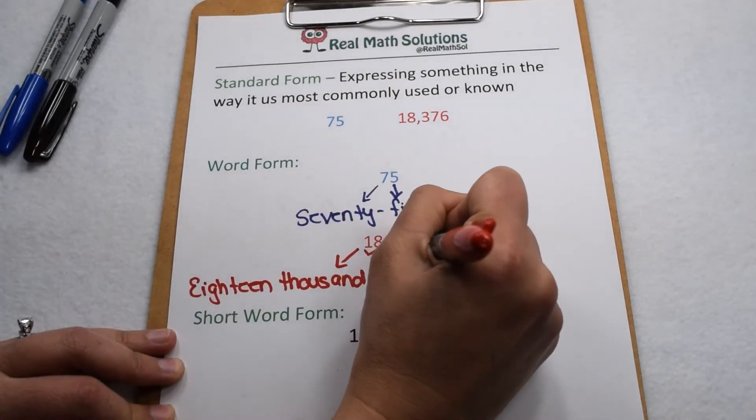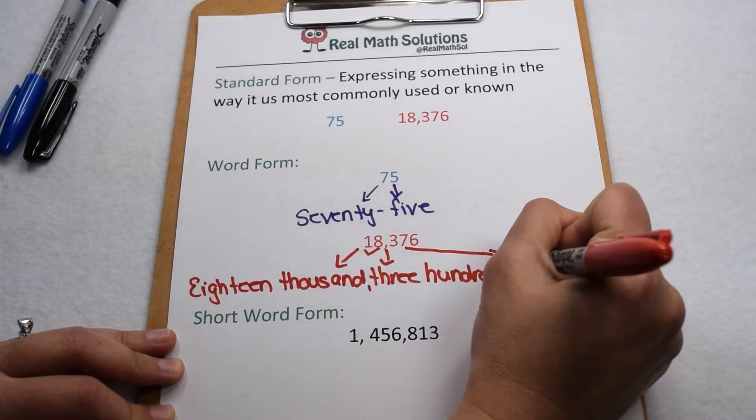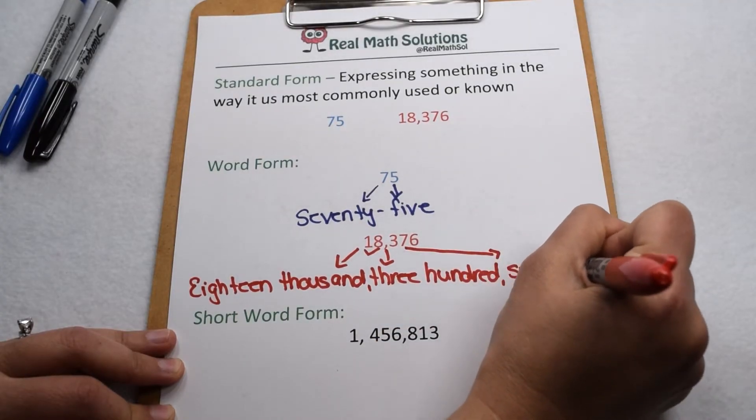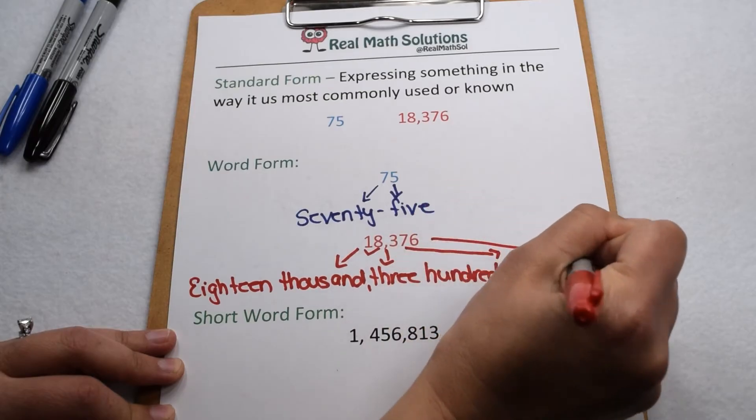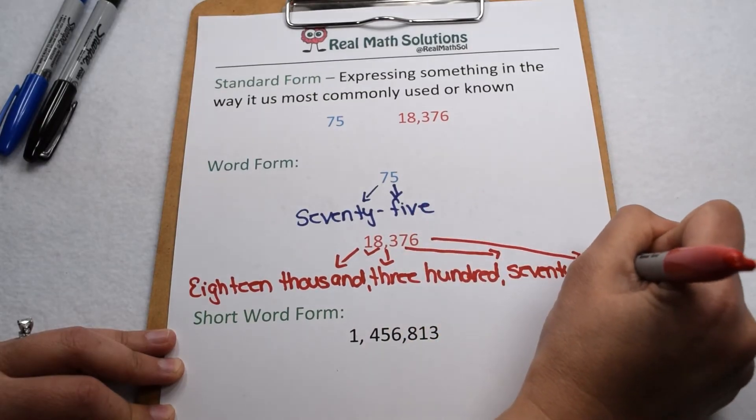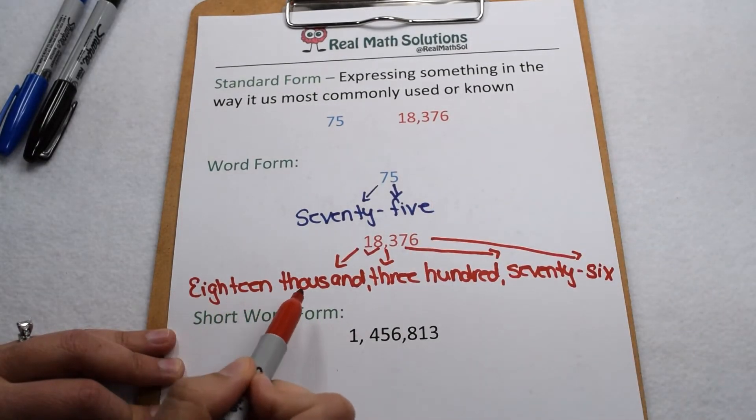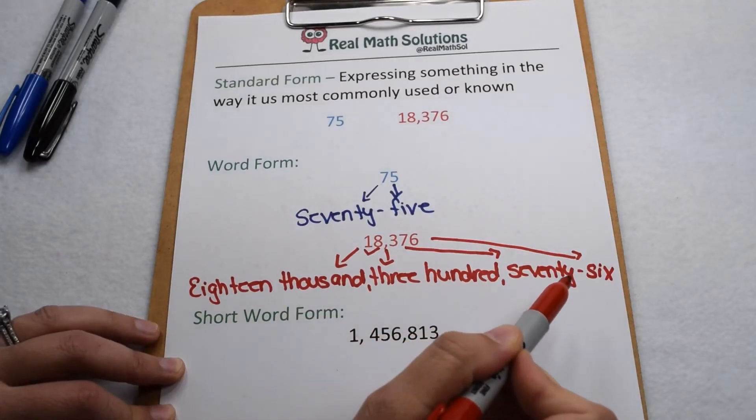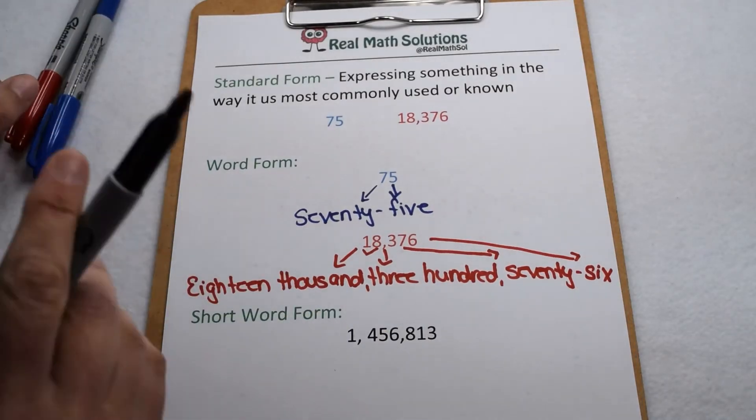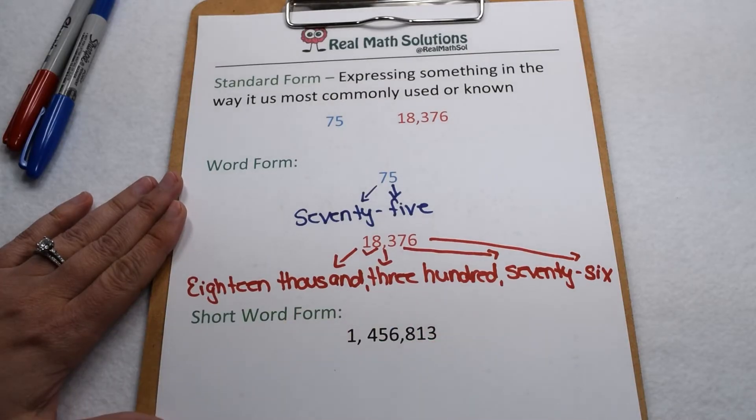7 is again in the 10 spot, so that would be 70. So we would write out the 70. And 6 is in the one spot, so we would write that out as 6. So in word form, we have 18,376. As we can see, as numbers get longer, they get harder and harder to write out in word form.